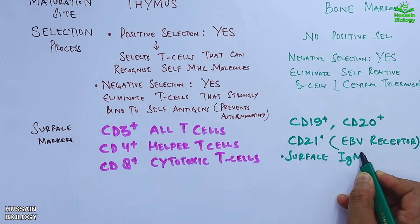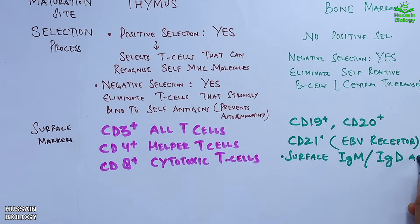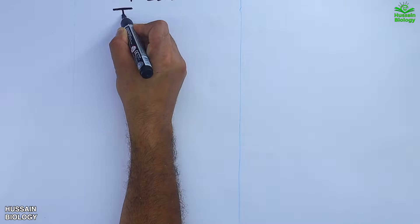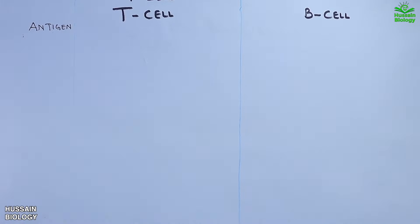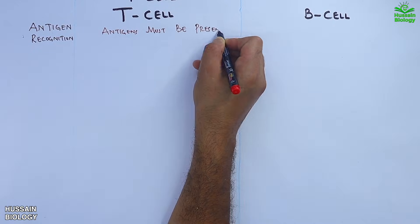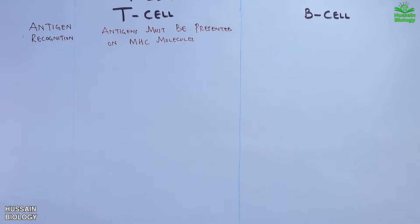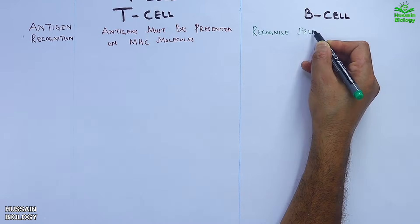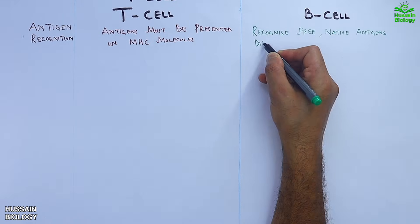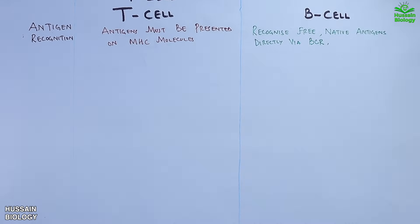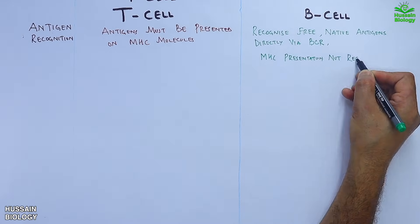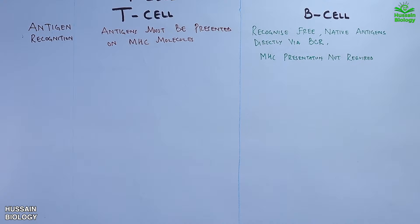B-cells also have surface IgM and IgD molecules which function as B-cell receptors. Moving on to antigen recognition, T-cells cannot recognize free antigens — the antigen must be presented on MHC molecules by antigen-presenting cells. B-cells, on the other hand, can directly recognize free native antigens via the BCR; MHC presentation is not required.